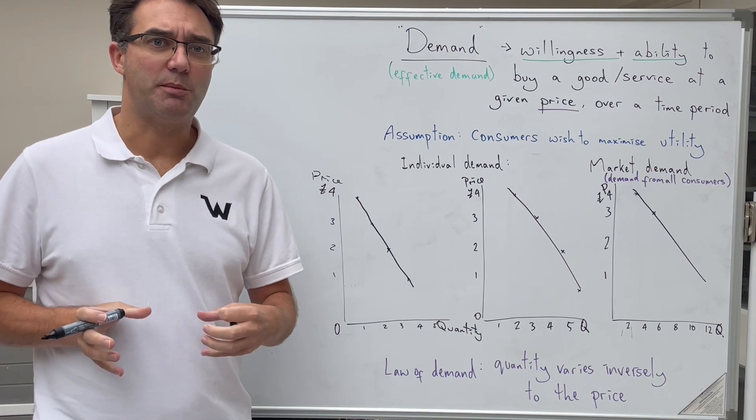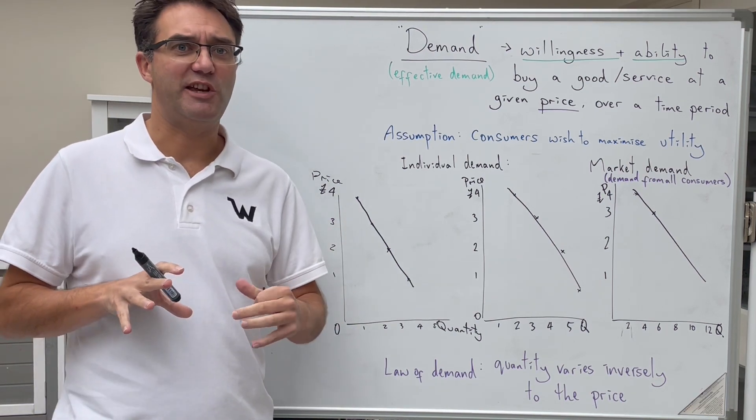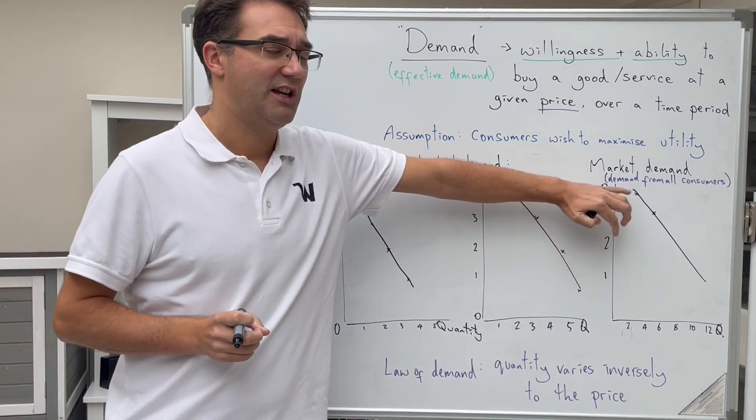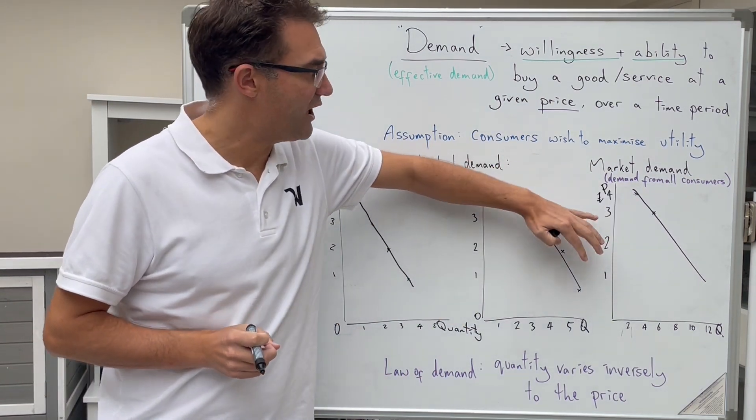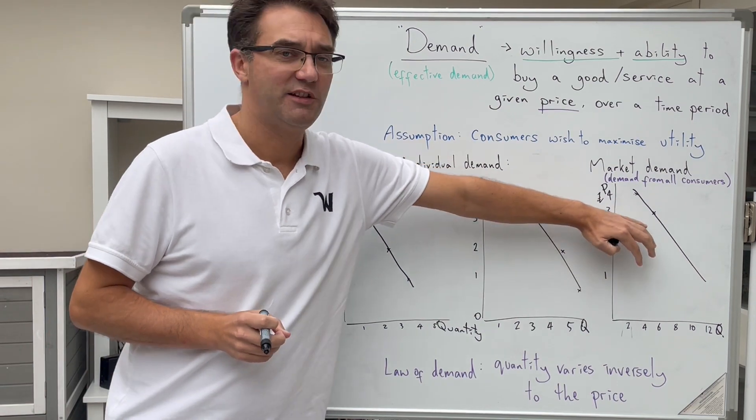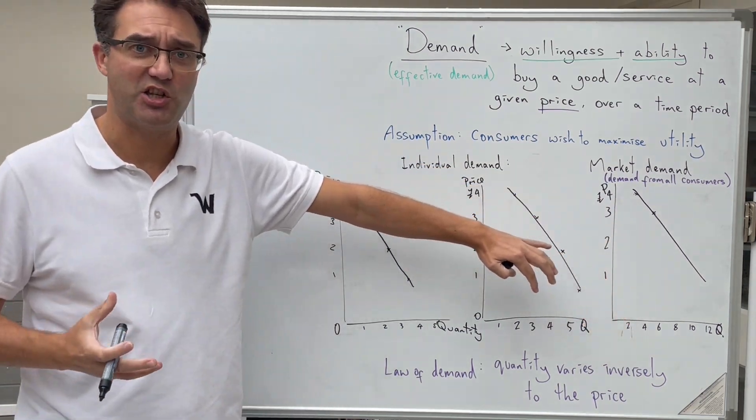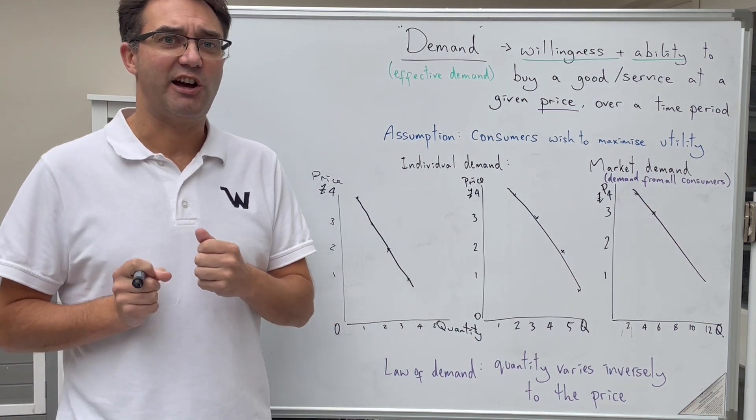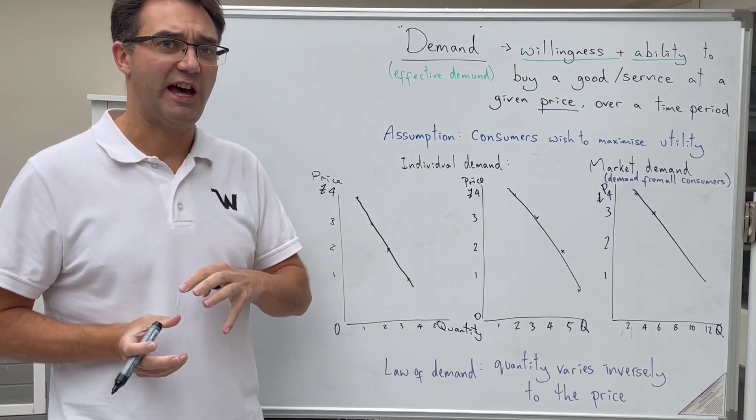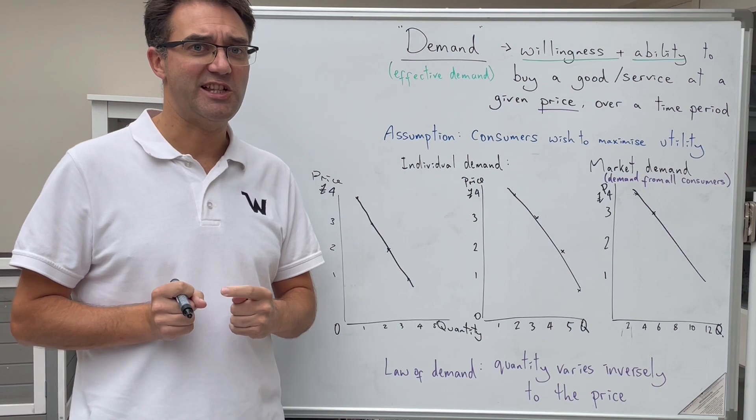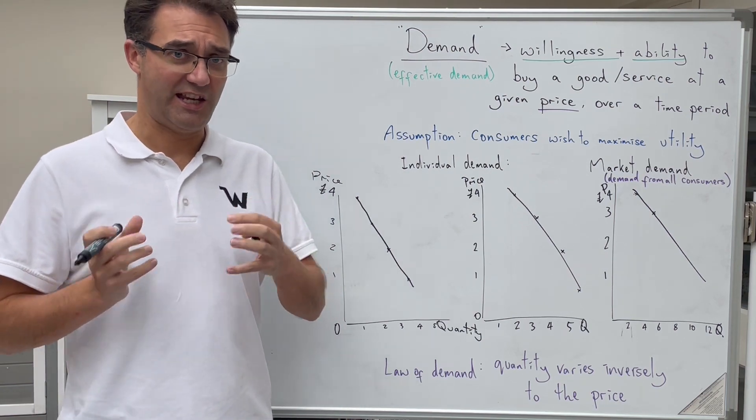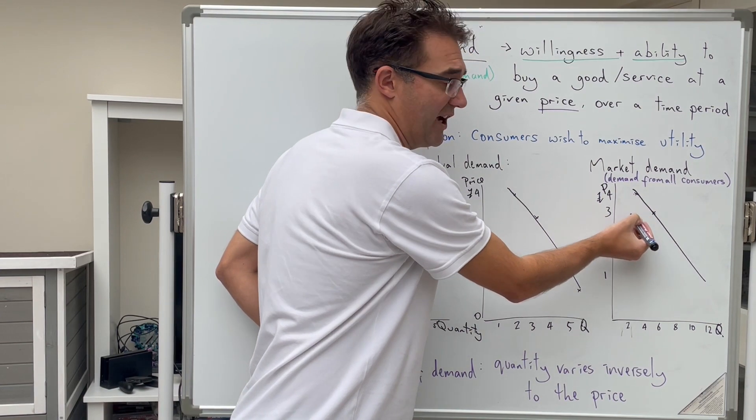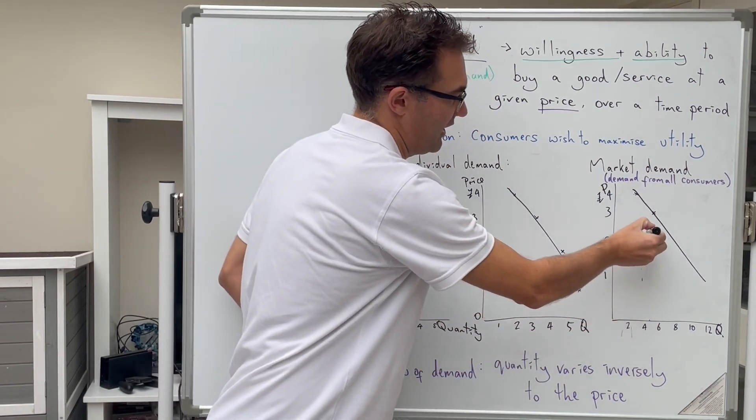Like with the individual demand curve, the market demand curve is still a series of if points. It's if the price is four pounds, this is how much will be bought. If the price is three pounds, this is how much will be consumed or purchased. Any change in price is going to lead to a shift along that curve and we can call these contractions or extensions.